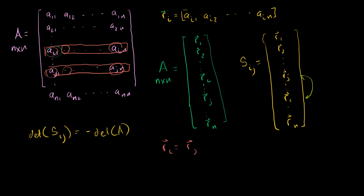So if rho i is equal to rho j, then this guy, then S, the swapped matrix, is equal to A. They'll be identical. You're swapping two rows that are the same thing.